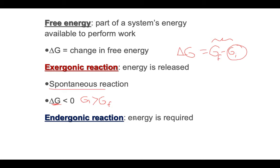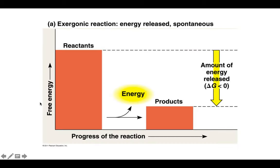Endergonic reactions are the exact opposite. Instead of energy being released, you have to put energy in for this to happen. This is going to absorb some of your energy, and basically this just means that delta G is greater than zero. I know this is all kind of vague, but it will make sense as I start to show you more examples. But just to give you a visual, here is a really simple graph showing the reactants and the products of a given reaction.